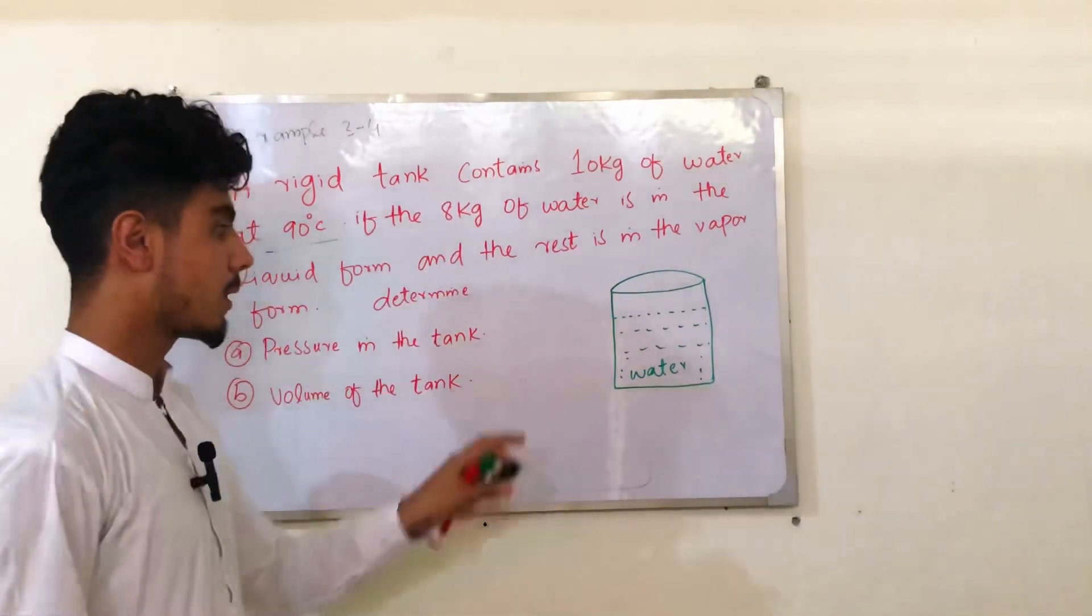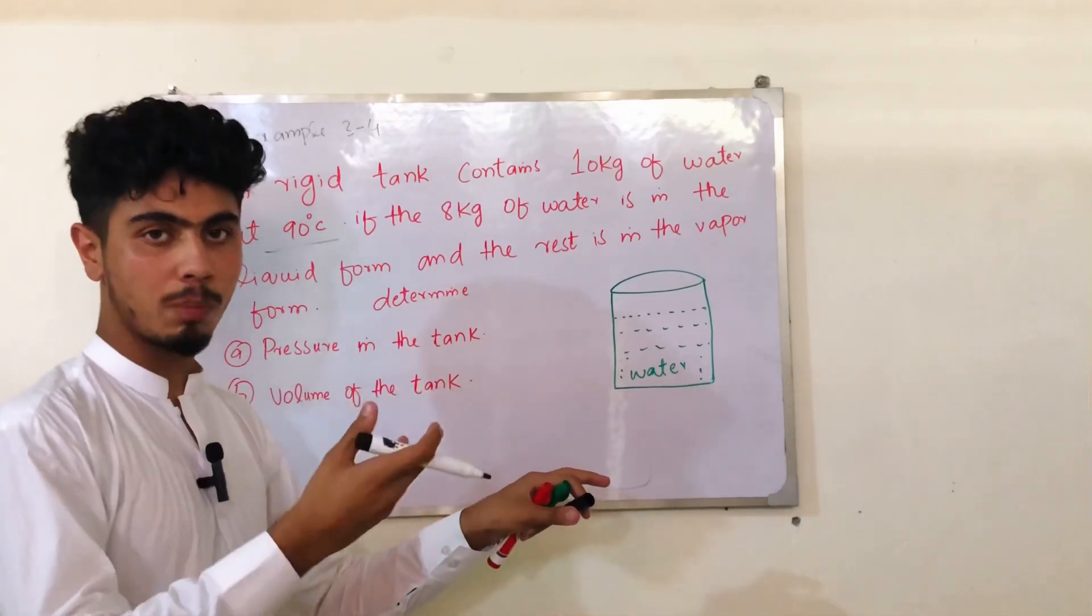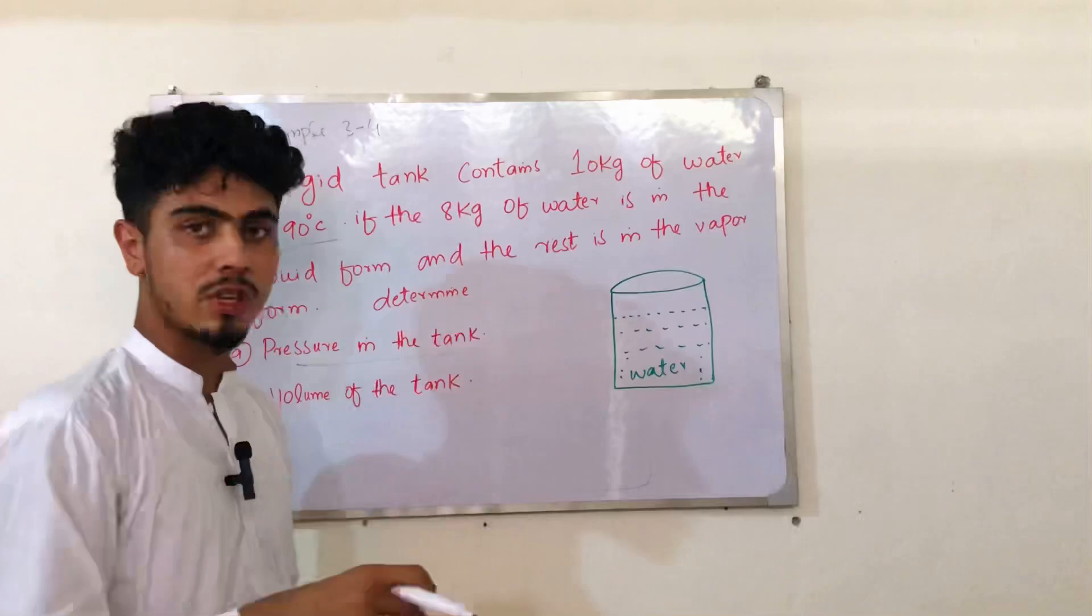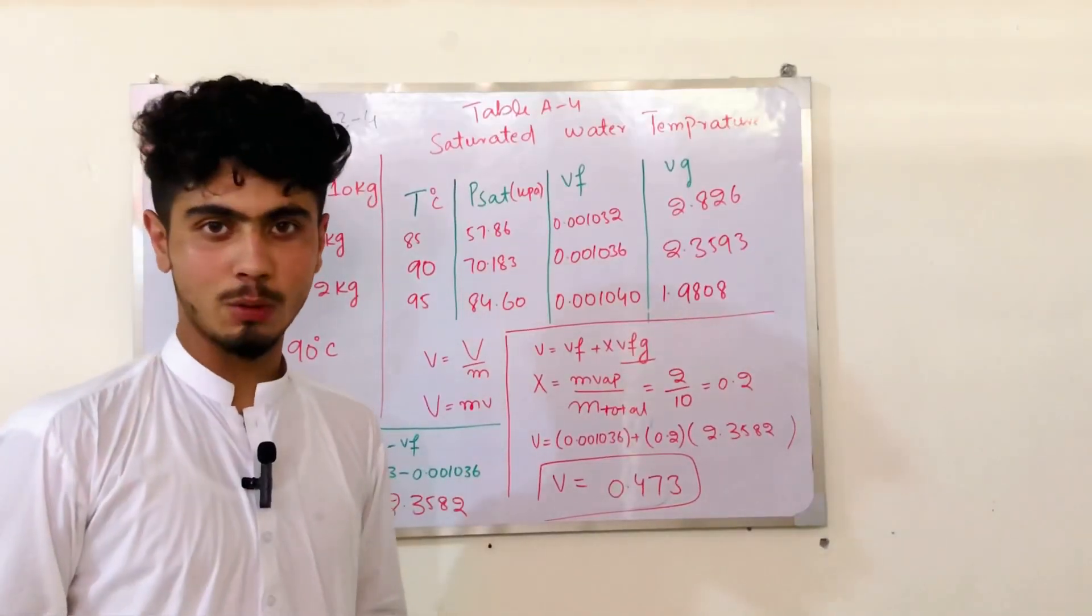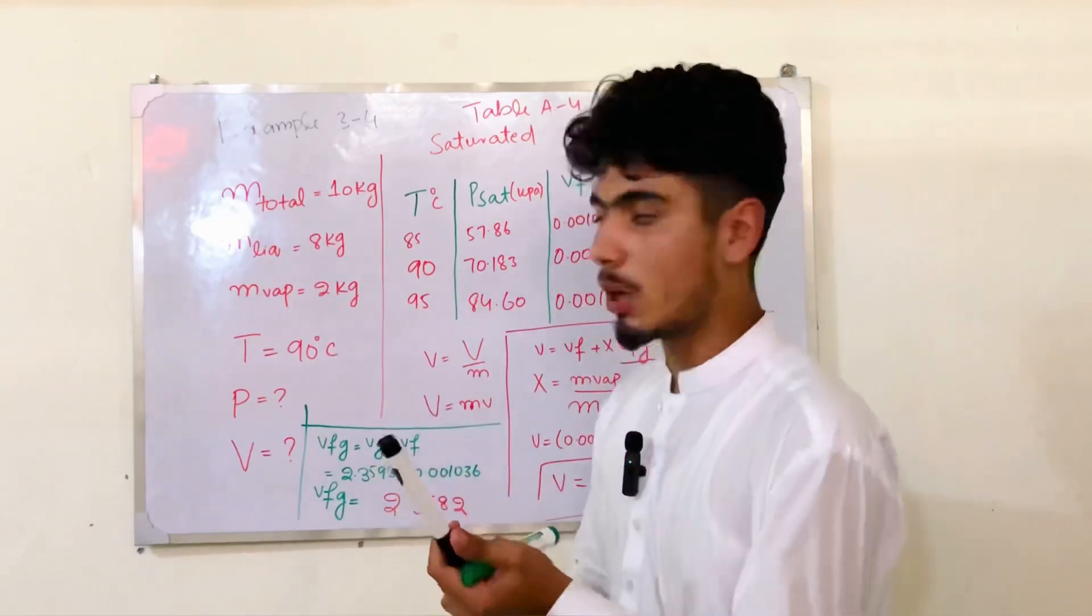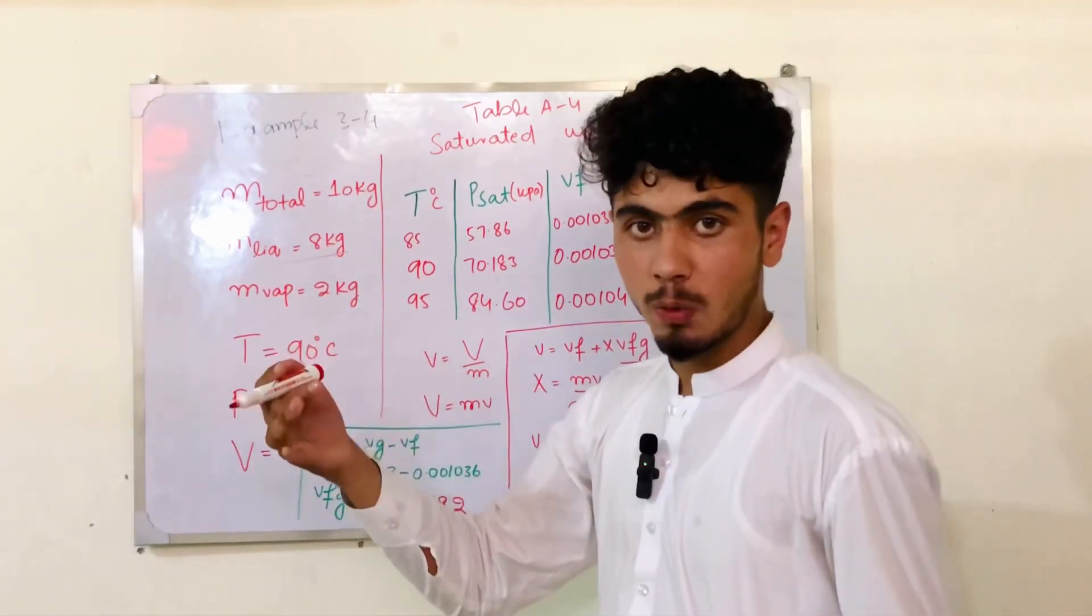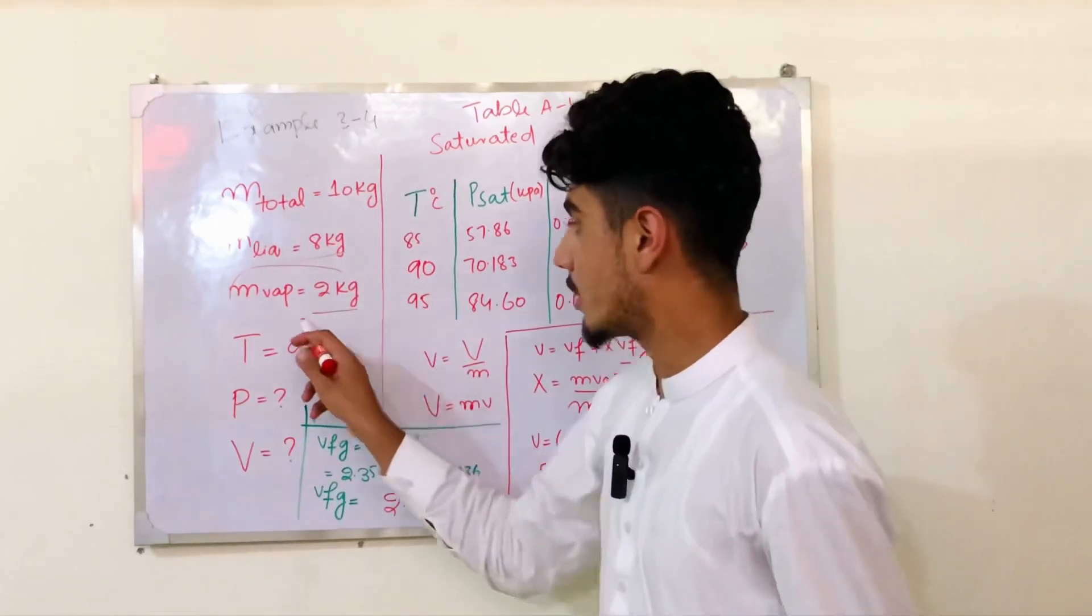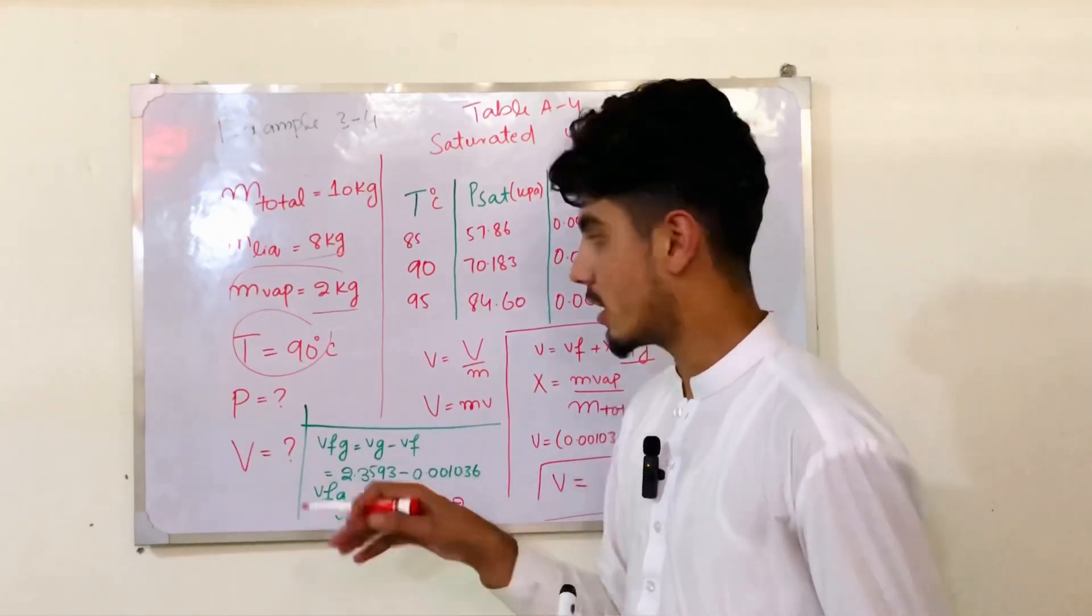The rigid tank contains 10 kg of water at 90 degrees Celsius. Of this, 8 kg is in the liquid phase and the remaining mass is vapor. At 90 degrees Celsius, we know the temperature. The tank volume is constant, so we know pressure and volume.